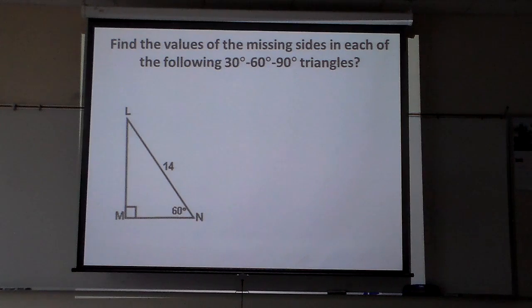Always find the 30 first. If they give us the 30 degree one first, it's even easier. What do I know about the 30 degree one compared to the big one? Well the big one is twice as big as the small one. So if this is 14, what's it make this one right here? Well 14 divided by 2 is 7, right?